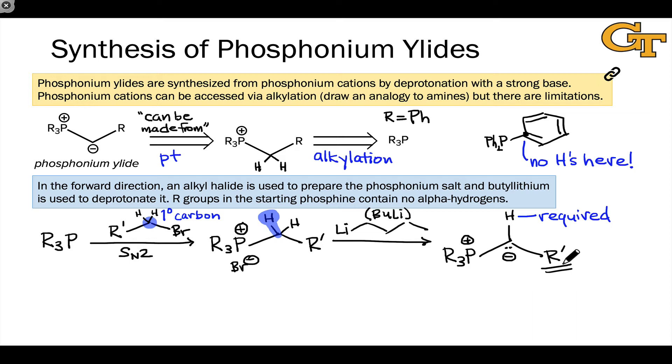One last thing to notice is that we can draw a resonance form of the phosphonium ylide that's alkene-like, that makes the ylide look like an alkene, certainly from the carbon's perspective, in which there's a double bond between the carbon and phosphorus, and both atoms are neutral.